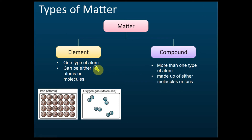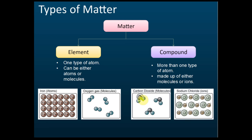Compound is the inverse of elements. If there are more than one type of atom, then it's called a compound. Compounds are made up of either molecules or ions. For example, C and O — carbon and oxygen — combine together to form a molecule, and this molecule has two types of atoms: carbon and oxygen. Therefore it's a compound.